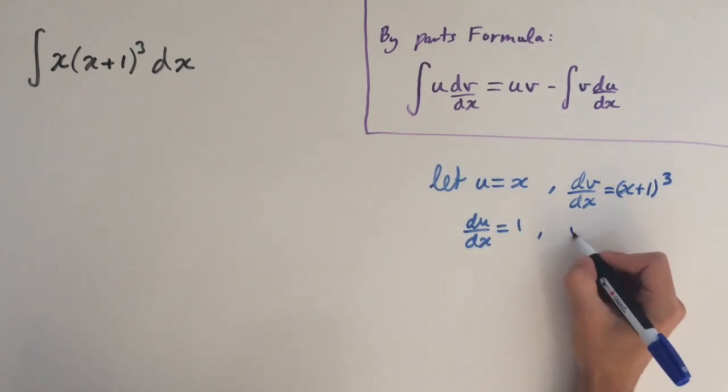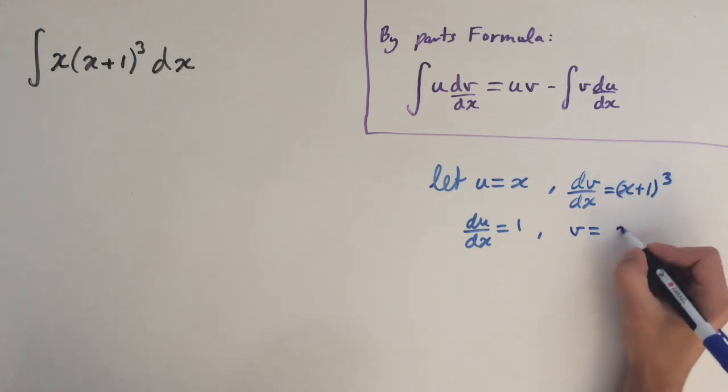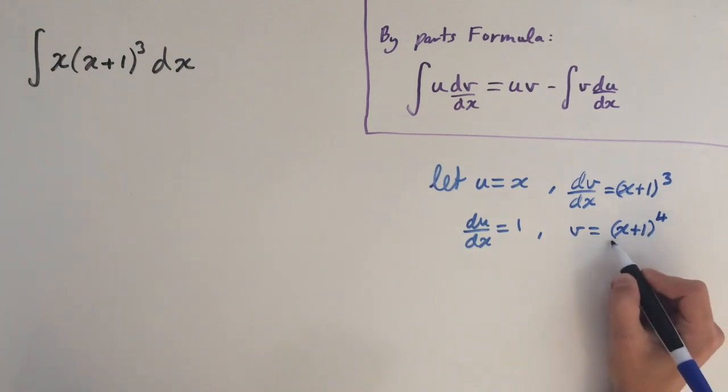And now we need to integrate this. So v equals x plus 1, and we raise the power by 1, so 4, and then divide by the new power, so we get over 4. And because the derivative of this bracket here is 1, we don't have to worry about the reverse chain rule.